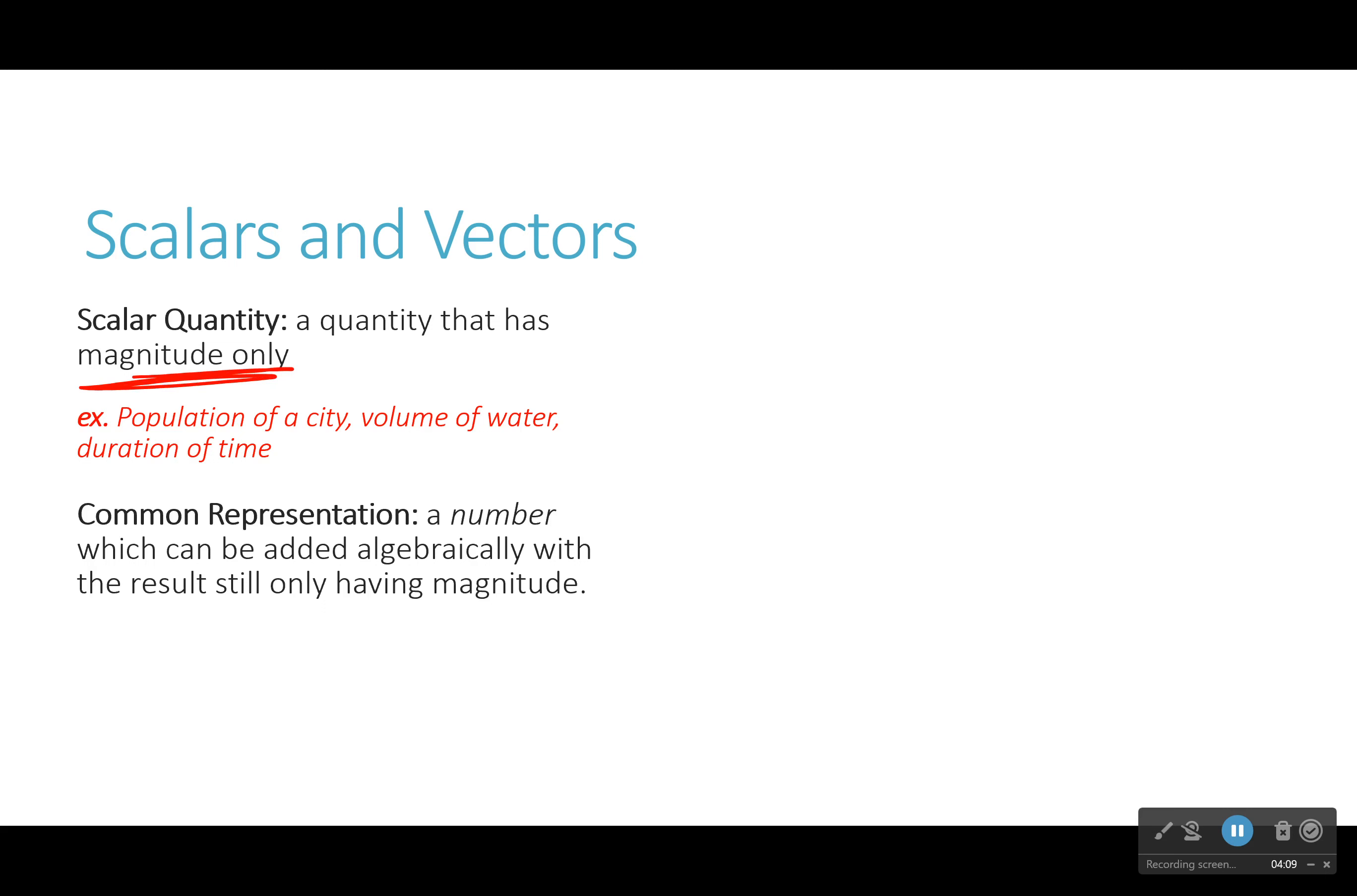Population of cities is one, volume of water, duration of time. Though time, we could say you could go backwards or forwards. And so all you will see with scalars is a number, and sometimes units, but no direction. And it can be added algebraically. So if I have two volumes of water, I can add them together. And the number will be the sum of those numbers. So two liters plus four liters is equal to six liters. I don't have to worry if this liter is pointing up or down because that just doesn't happen with volume.